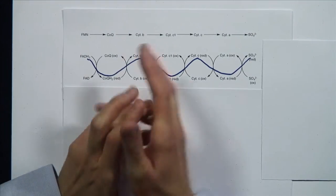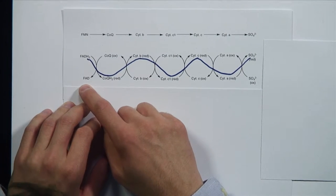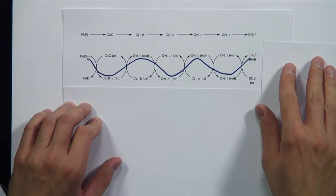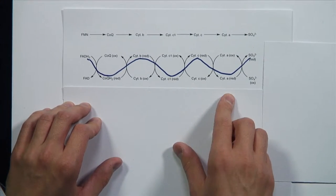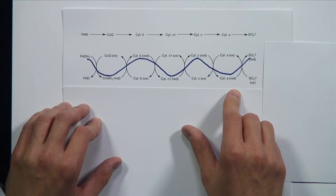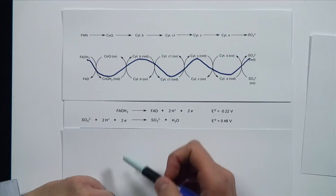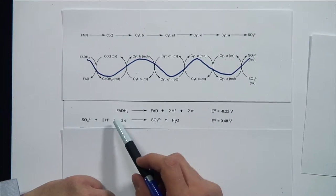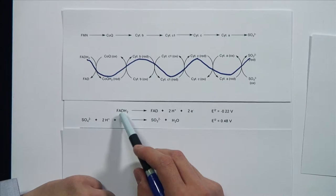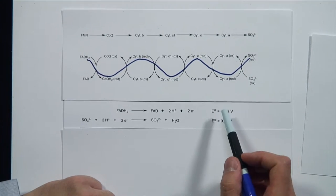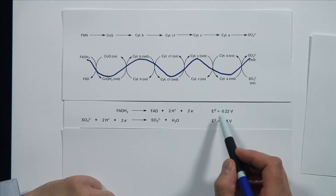This segues into part B of the problem, which asks us to calculate how much energy we get by converting one molecule of FADH2 and one molecule of sulfate into FAD and sulfite, respectively. Only FADH2 and sulfate are consumed; all other electron carriers are recycled and regenerated in the course of the electron transport chain. In order to calculate the energy, it's useful first to write the half reactions of the redox processes.